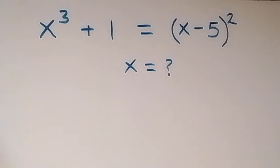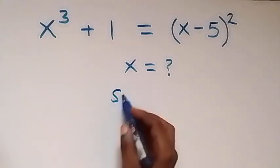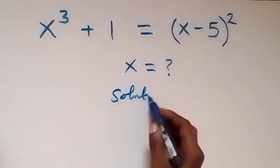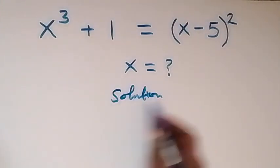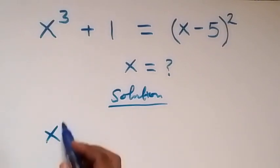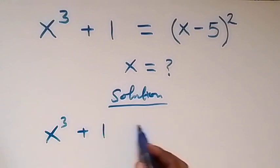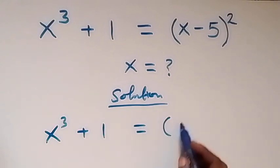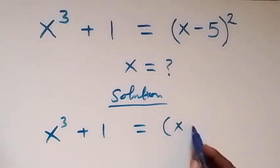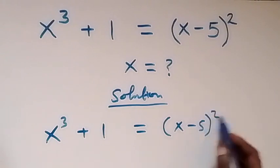Hello, you are welcome. How to solve this nice algebra problem. The solution starts from what is given, which is x raised to power 3 plus 1 equals to bracket x minus 5 close bracket square.